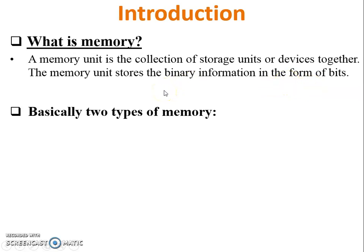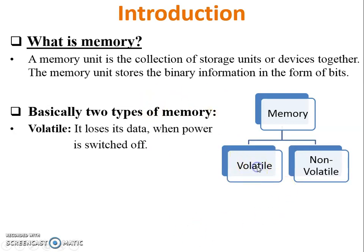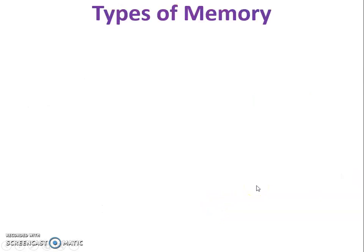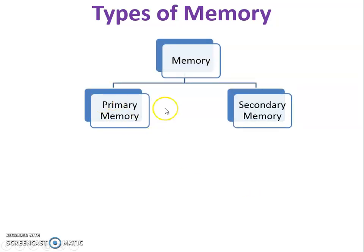Basically, memory is divided into two types: the first one is volatile and the second one is non-volatile. Volatile means it stores data on a temporary basis, so it loses its data when the power is switched off. Non-volatile means it stores data permanently, so when the power is off, its data remains as it is — there is no loss of data.